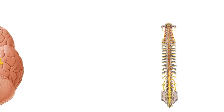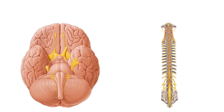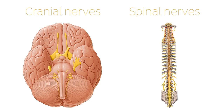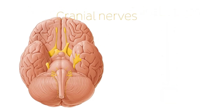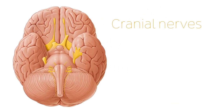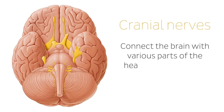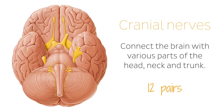There are two types of nerves: cranial nerves and spinal nerves. Cranial nerves connect the brain with various parts of the head, neck, and trunk. There are 12 pairs of them, which are all these yellow structures you see on this image.